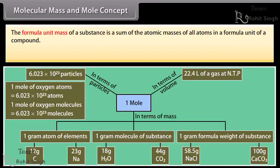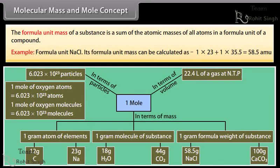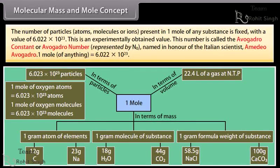The formula unit mass is the sum of the atomic masses of all atoms in a formula unit of a compound. Example: formula unit NaCl. Its formula unit mass can be calculated as 1 times 23 plus 1 times 35.5, which equals 58.5 units.